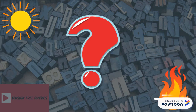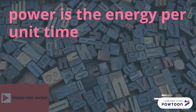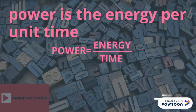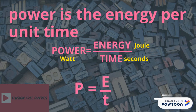But what is the power? The power is the energy per unit time. Let's put that in an equation: power equals energy over time, where power is expressed in watts, the energy in joules, and the time in seconds. Therefore, P = E / T. Note that watt is equal to joules per second.